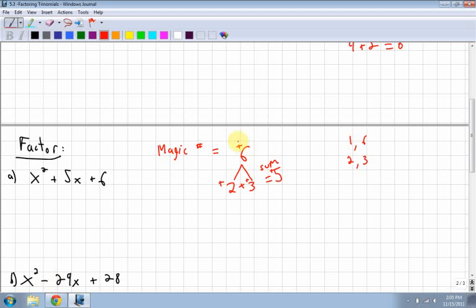That is extremely important because these signs do change, like we'll see in the next one. So they have to multiply to a positive 6, add to a positive 5. So I know both my 2 and my 3 have to be positive. They multiply to 6, add to 5. So then when I'm factoring this, I set up my two sets of brackets. I know my x tiles, or like from before, my x is going to be first. And then it's going to be x plus 2 and x plus 3, the two factors that I just found.